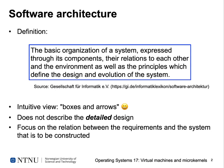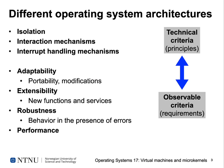What we're interested in today is the focus on the relation between the requirements to a system and the system software that is to be constructed according to these requirements. For different operating system architectures we have technical criteria — principles of construction — as well as observable criteria, which are requirements to the system. Technical criteria include isolation: can we achieve the objective that one process is unable to change or analyze the memory contents of another process or the operating system? We also have interaction mechanisms like shared memory, interprocess communication, and interrupt handling.